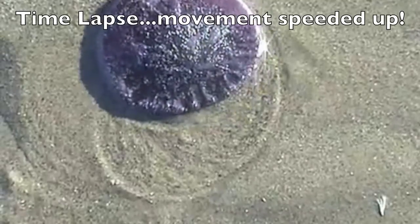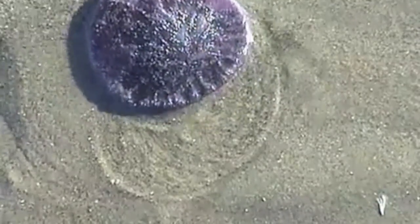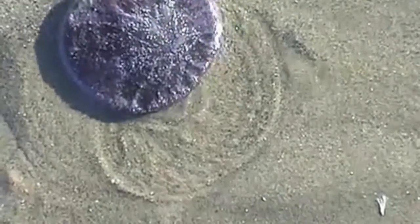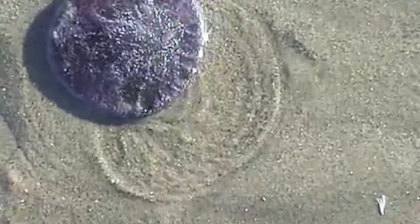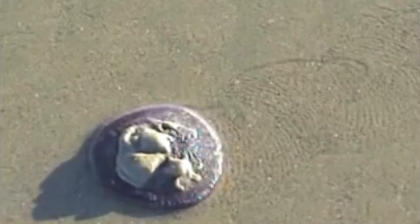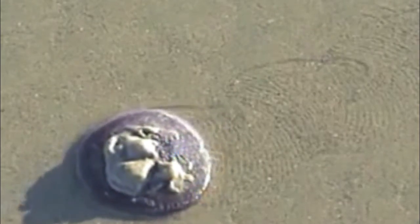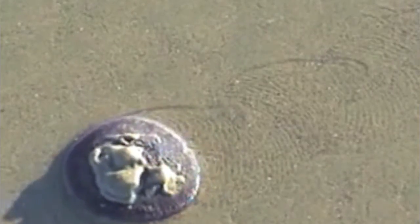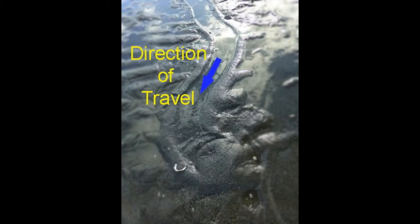At low tides, when the beds are exposed, they may be seen slowly moving across the wet sand surface, leaving a track behind. A sand dollar at Foul Weather Bluff in Hansville, Washington made this track, ending up buried beneath the sand.